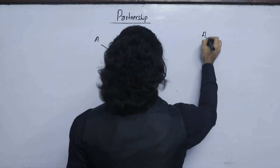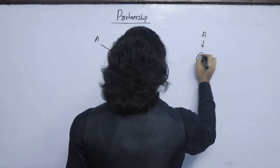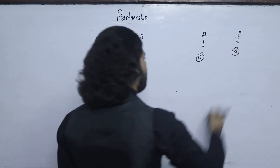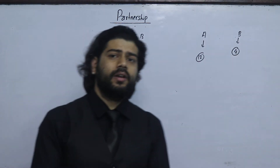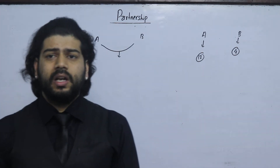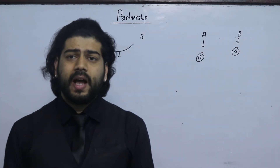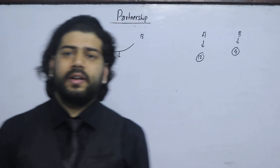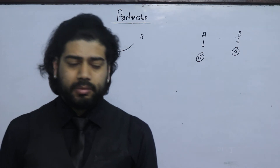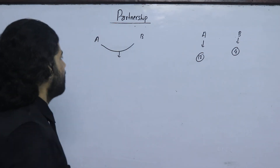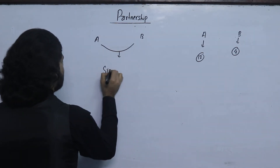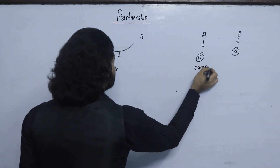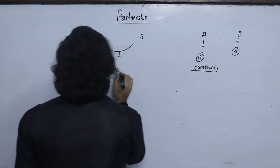Then there is the different time period type. There are two main types: Simple partnership and Compound partnership. Simple partnership involves the same time period, while compound partnership involves a different time period.